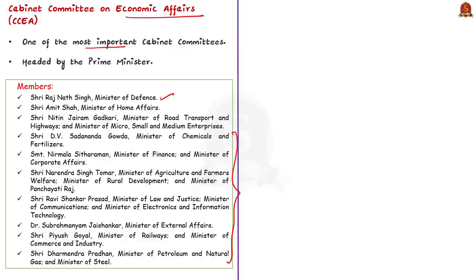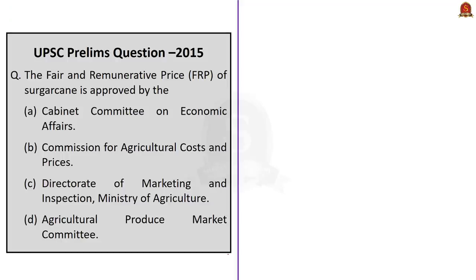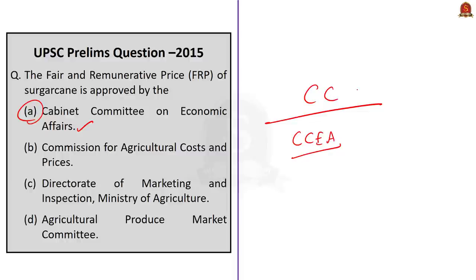The functions of the CCEA include matters regarding the fixation of prices of agricultural products. Based on the CCEA, there was a question in the 2015 prelims: 'The fair and remunerative price of sugarcane is approved by?' The correct answer is the Cabinet Committee on Economic Affairs. From this discussion, you can see the importance of Cabinet Committees and specifically the Cabinet Committee on Economic Affairs.